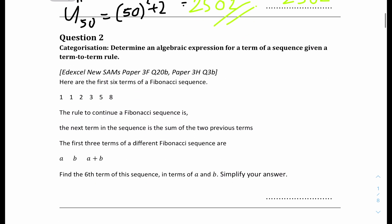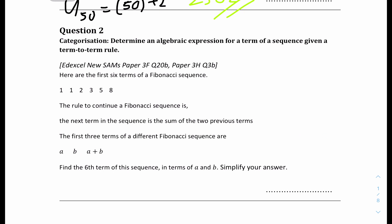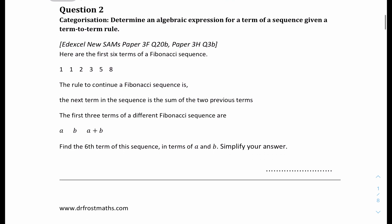Number 2: here are the first 6 terms in the Fibonacci sequence. The rule is that the next term in the sequence is the sum of the 2 previous terms, and the first 3 terms are shown. Find the 6th term in terms of A and B. We can just do it out manually to visualize. So the first term is A, the second term is B, and the third term is A plus B.